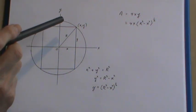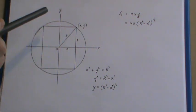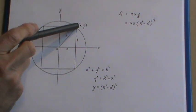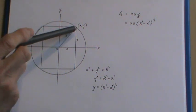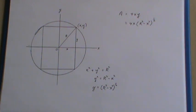That means if we use x and y as coordinates of this point, the width of the rectangle would be 2x. The height here would be 2y. So the area would be 2x times 2y or 4xy.